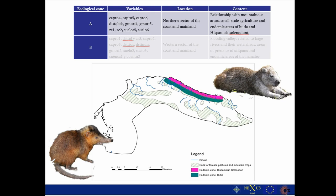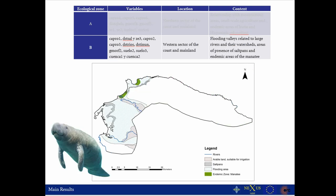For this, I created two ecological zones related to different activities. Ecological zone number one is characterized by a relationship with mountainous areas, small-scale agriculture, and endemic areas for the Hutia and Solenodon. Ecological zone number two is more related to flooding valleys, large rivers and watersheds, areas of presence of saltpans, and the endemic area of the manatee — the animal that, as you perhaps know, inspired the mermaids. It is said that when Columbus and his men arrived in the Caribbean, they saw the manatee and thought there was a human living under the water.